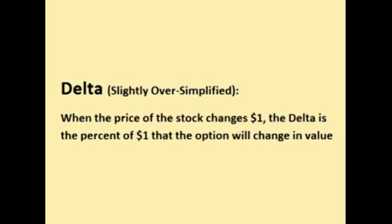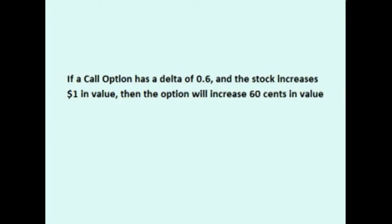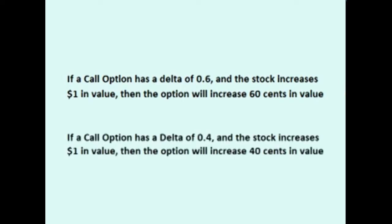It is a bit of an oversimplification, but a simple way of thinking of it is: when the price of the stock changes $1, the delta is the percent of $1 that the option will change in value. For instance, if a call option has a delta of 0.6 and the stock increases a dollar in value, then the option will increase 60 cents in value. If a call option has a delta of 0.4 and the stock increases a dollar in value, then the option will increase 40 cents in value.